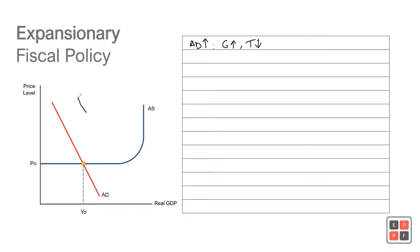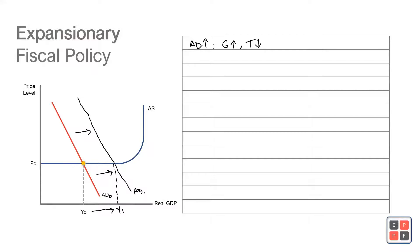Aggregate demand increases from AD0 to AD1. Why? Because if the government is increasing its spending and lowering the rate of taxation, people will have more disposable income, firms will have more net profit, investment (I) will increase, and consumption (C) will increase — so aggregate demand is going to increase. You can see the first effect is that output is going to increase from Y0 to Y1.